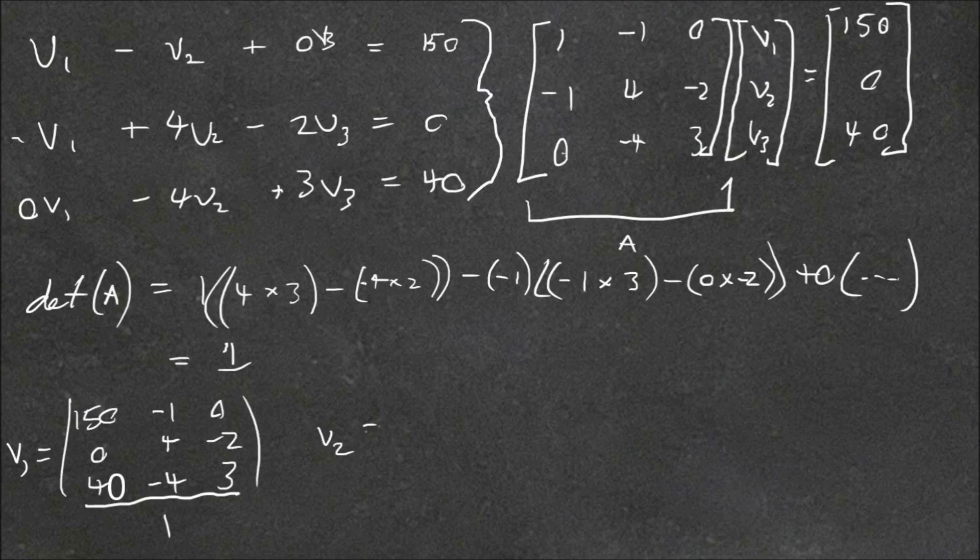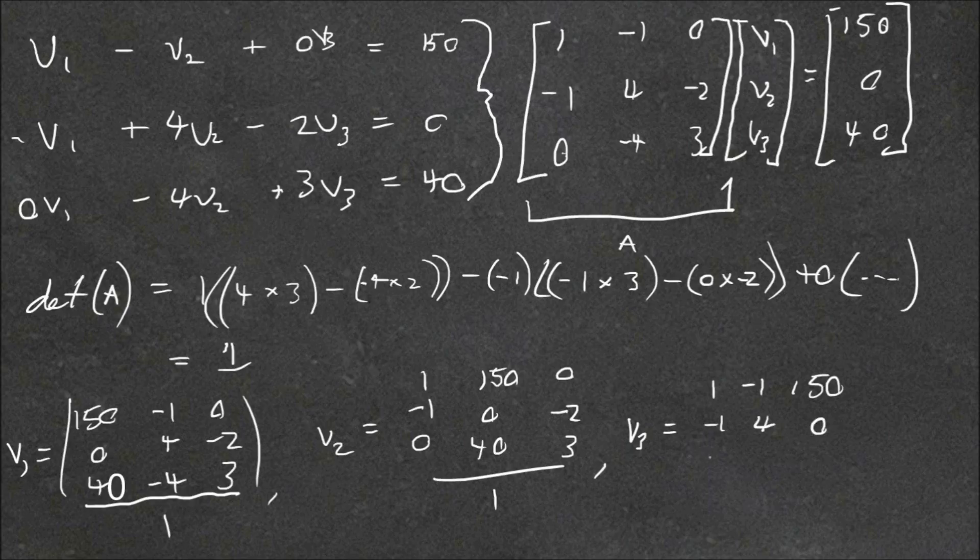For V2, we'd get 1 minus 1 0, so that's the first column. We'll replace the second column with 150, 0, 40. Then 0 minus 2 3, and divide by our determinant. For V3, we have 1 minus 1 150, minus 1 4 0, 0 minus 4 40, divided by 1.